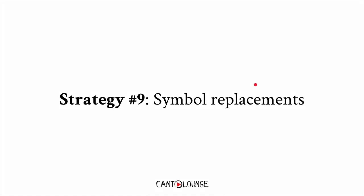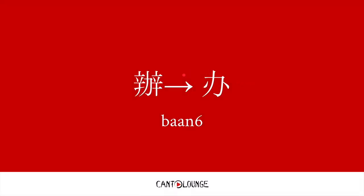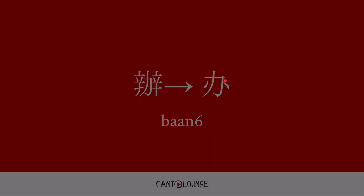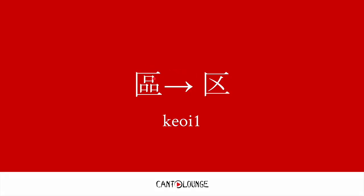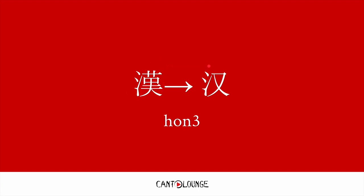Strategy number 9: symbol replacements. For example, these two bits on the left and right sides are replaced simply with these two. 做 meaning to do some job, some kind. This bit inside is simply replaced with the cross here. 区 meaning area. Here, this bit is replaced with this. 汉 meaning the Han kind of tribe.